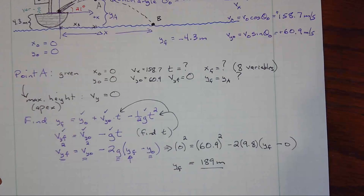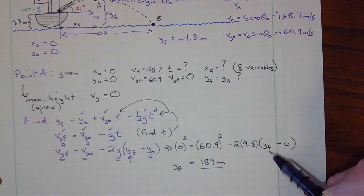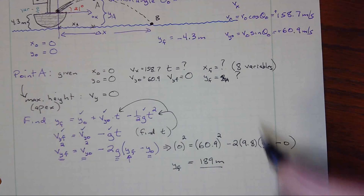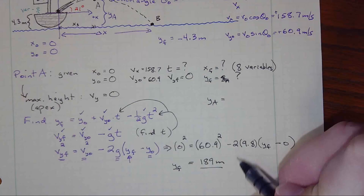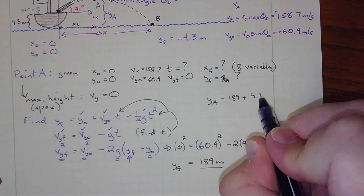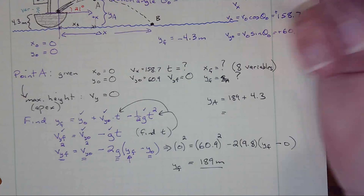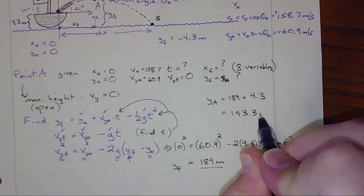Notice that this 189 meters was the height relative to y₀. So my y_sub_a — the maximum height above the water surface — is going to be y_final plus the 4.3 meters the cannon was above the water surface. That gives me 193.3 meters. So that is our maximum height above the water.